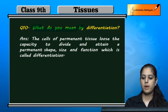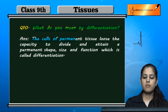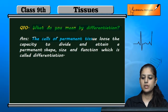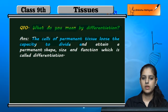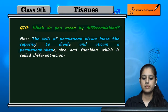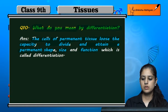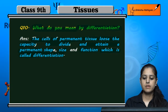What do you mean by differentiation? What is differentiation? The cells of permanent tissue lose the capacity to divide and attain a permanent shape, size and function, which is called differentiation.